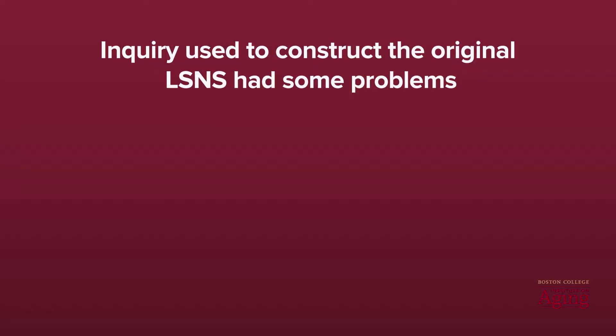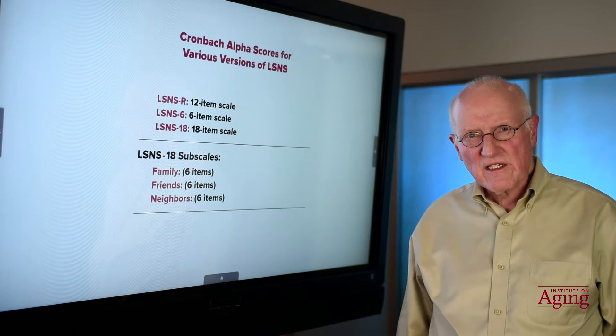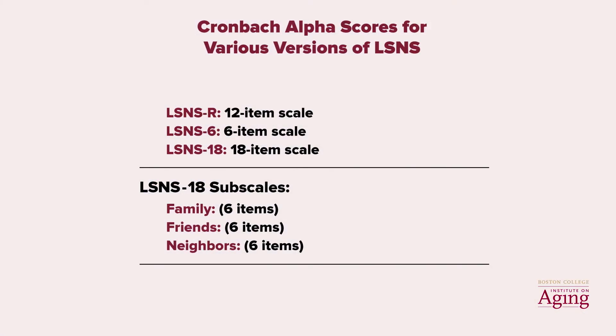The LSNS enabled calculating a family subscale and a friendship subscale. Lower scores on the LSNS have been used as a proxy for social isolation. However, the inquiry used in the original LSNS had some problems. Some of the items were double-barreled questions, so it was unclear whether respondents were answering the first part of the question or the second part. Further, a couple of the items produced limited variation. Thus, we set about constructing a new and improved version of the LSNS that would address these problems.